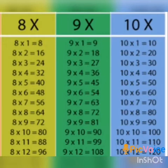Table of 8: 8 ones are 8, 8 twos are 16, 8 threes are 24, 8 fours are 32, 8 fives are 40, 8 sixes are 48, 8 sevens are 56, 8 eights are 64, 8 nines are 72, 8 tens are 80, 8 elevens are 88, 8 twelves are 96.